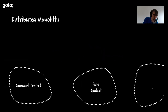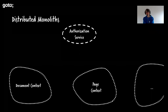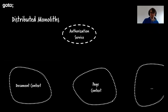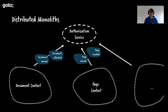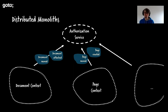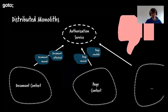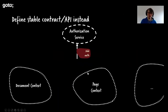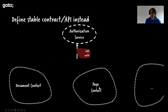One example I like: a team built a document management system using domain-driven design with contexts for documents, pages, and so on, plus an authorization service. They had many events flowing — 'new page', 'new document' — and the authorization service had to react to all of them to create the right authorization entries. They ended up with a distributed monolith: every change in the document context required a change in the authorization service. They switched to a command-driven API — the context does everything internally and tells the authorization service what to add. Now they had a stable authorization service and truly local changes.